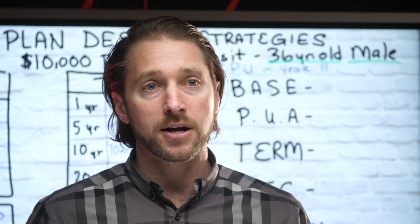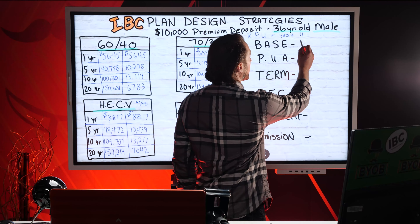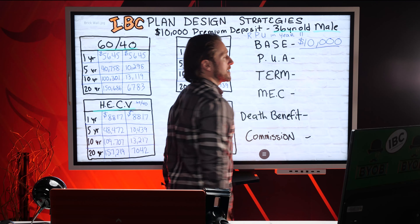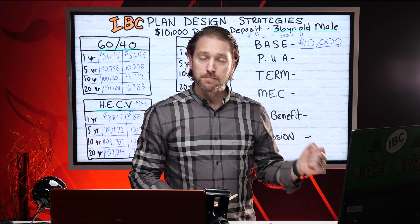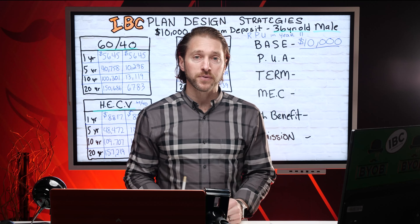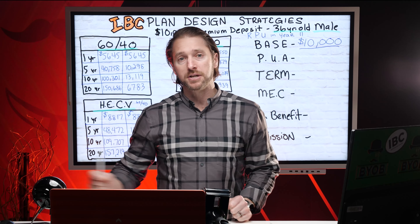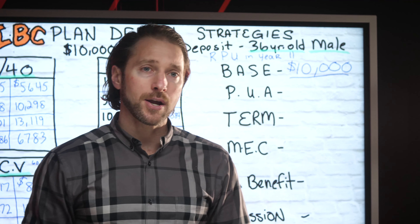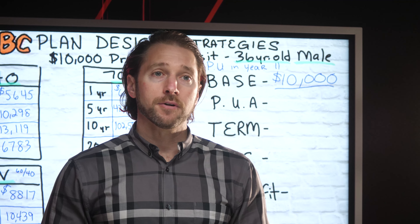So if they were to design a $10,000 policy, they would most likely put all $10,000 into the base of the contract, which would get you the maximum death benefit but also minimize the amount of cash value you have to use. In the infinite banking concept, the number one thing we want to do is maximize the amount of cash value and minimize the amount of death benefit. It sounds backwards — and it is. We're designing a whole life backwards, with the cash and the efficiency of your cash value growth first.